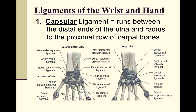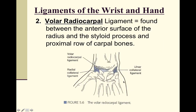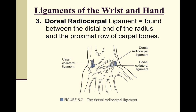Regarding the ligaments: the capsular ligament forms the joint capsule running between the distal radius and ulna down into the carpal bones. The volar radiocarpal ligament stabilizes the front of the wrist joint when in anatomical position. The dorsal radiocarpal ligament is smaller and sits on the back side of the hand, since there is more stabilization needed on the volar side.